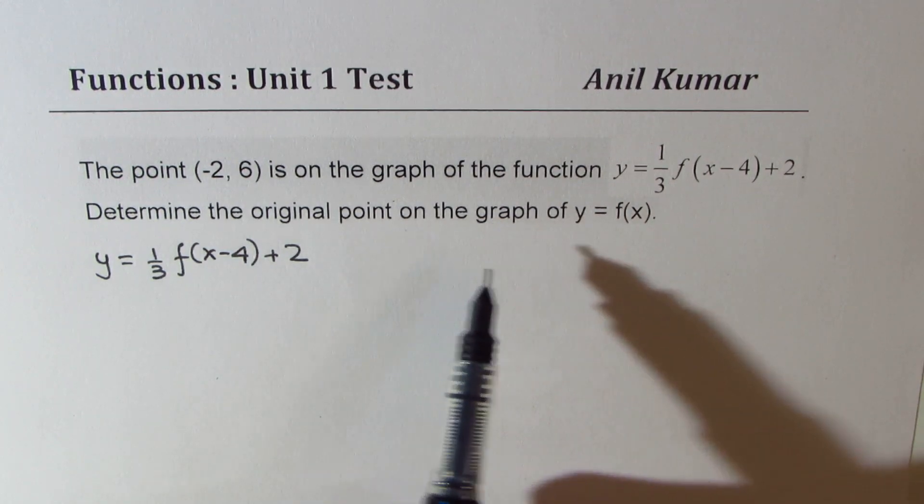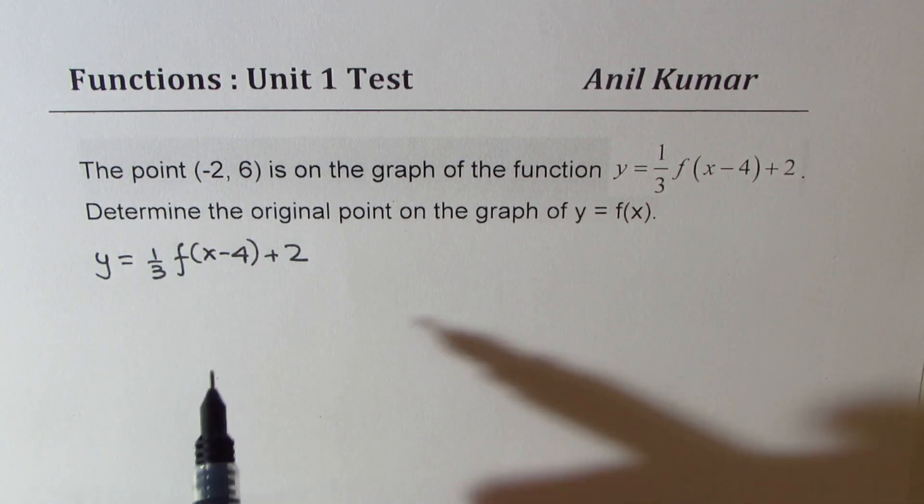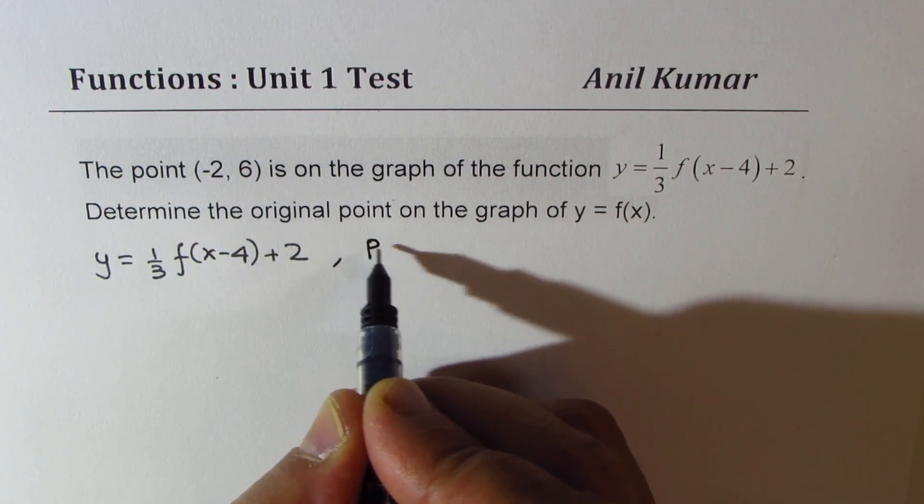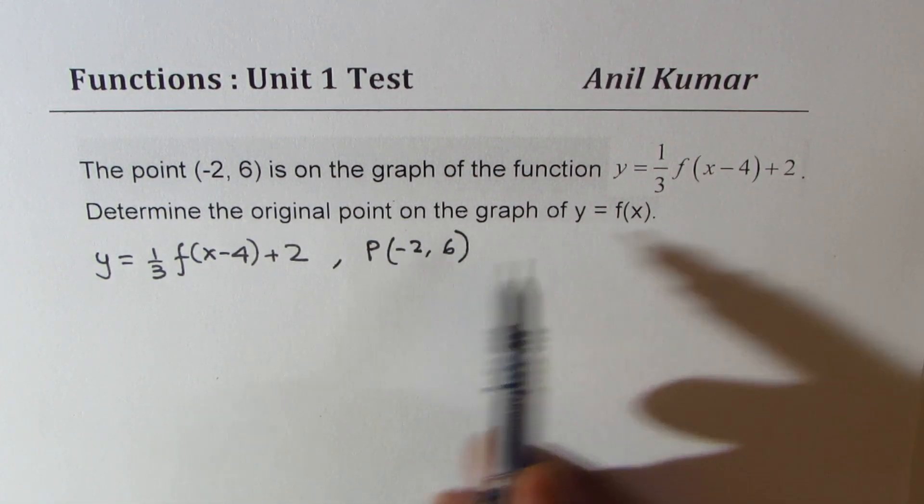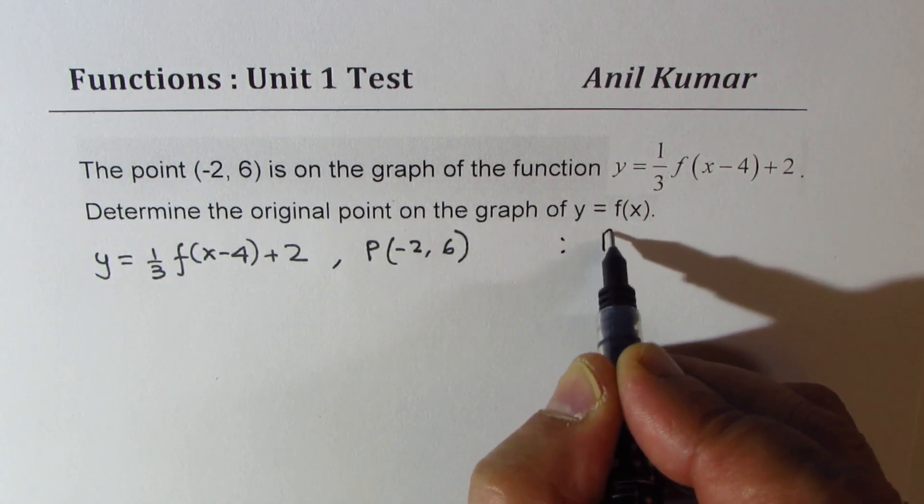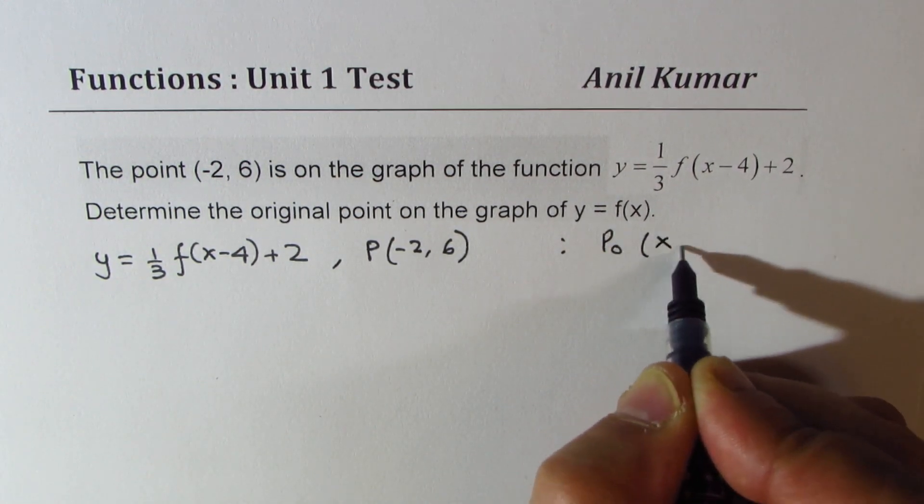Determine the original point on the graph of f(x). So the point given to us here, let's say P, is (-2, 6). Now on the original graph, we want to find P₀, let it be (x, y).